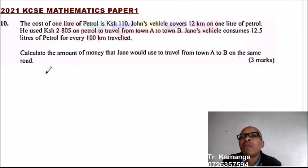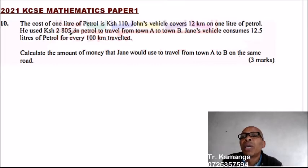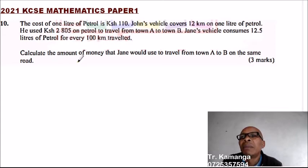Question number 10. The cost of one liter of petrol is 110 Kenyan shillings. John's vehicle covers 12 kilometers on one liter of petrol. He used 2,805 Kenyan shillings on petrol to travel from town A to B. John's vehicle consumes 12.5 liters of petrol for every 100 kilometers traveled. Calculate the amount of money that Jenny would use to travel from town A to B on the same road. You get three marks.